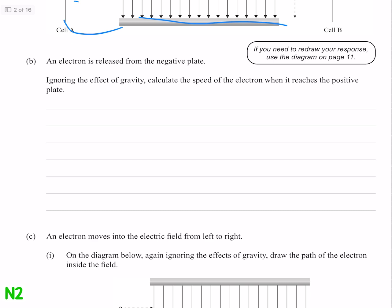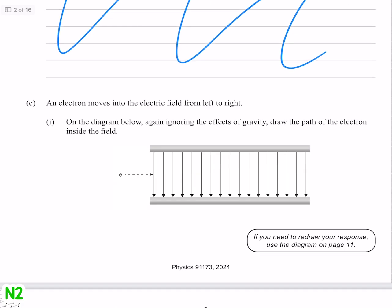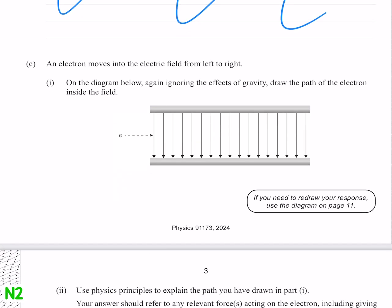An electron is released from the negative plate, ignoring the effect of gravity, and hell, let's just ignore this question. On the diagram below, after ignoring the effects of gravity, draw the path of the electron inside the field. Good enough.